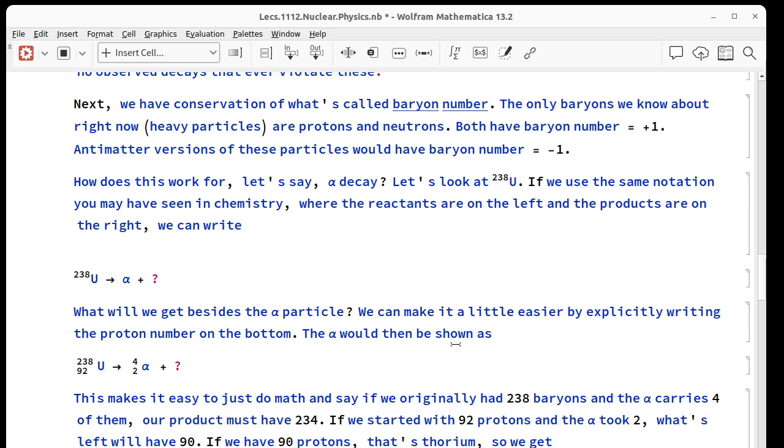How does this work for an alpha decay? Something that alpha decays is uranium-238. We use the same kind of notation you see in chemistry, where you have the input on the left and then an arrow and the output on the right. If 238 uranium is going to alpha decay, we know that on the other side of the arrow we've got an alpha particle, but what else? We can write the proton number and nucleon number on the alpha and uranium. Uranium is 92 protons. U-238 is 238 baryons altogether. The alpha particle is 4 baryons, 2 of them are protons.